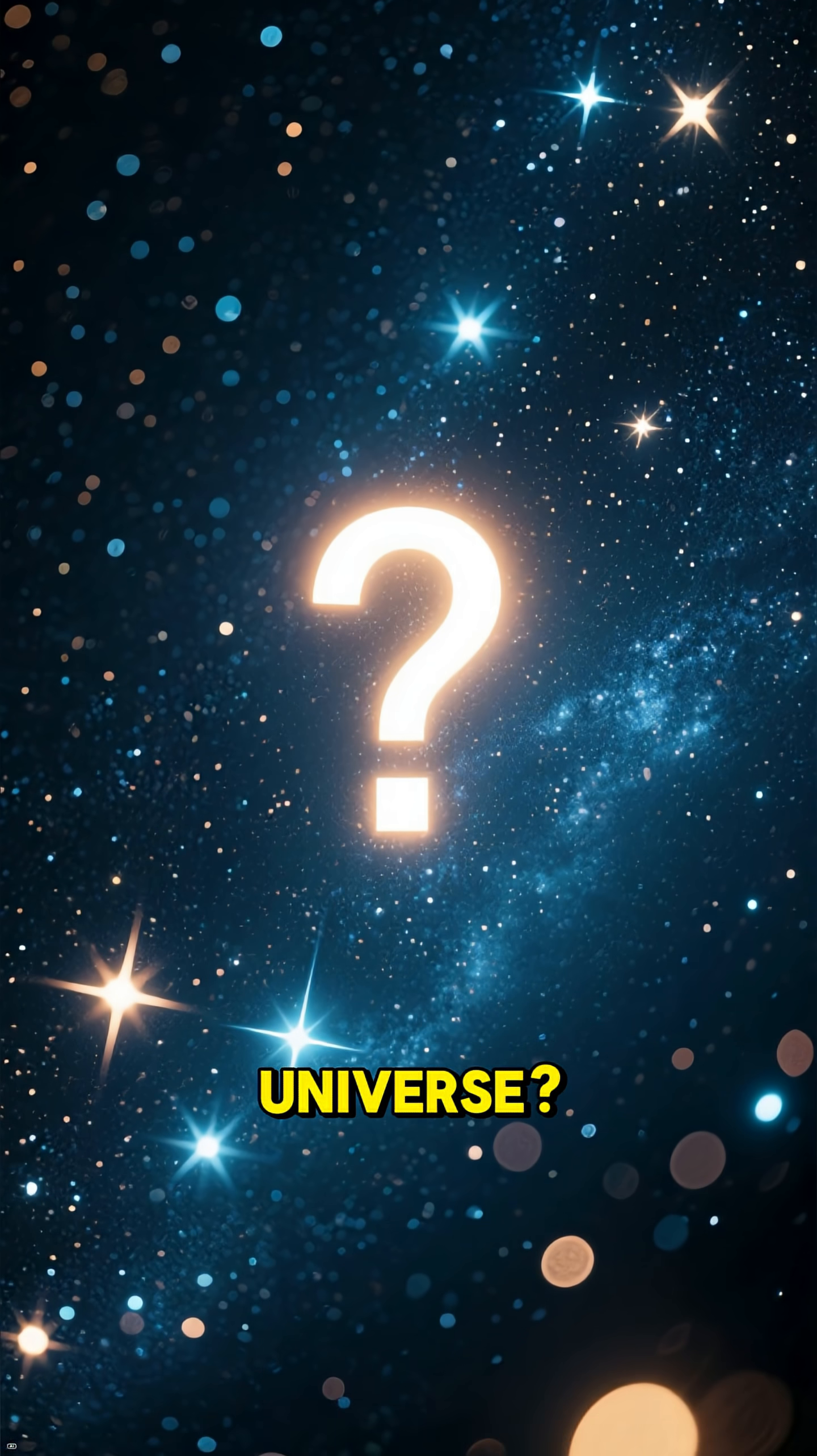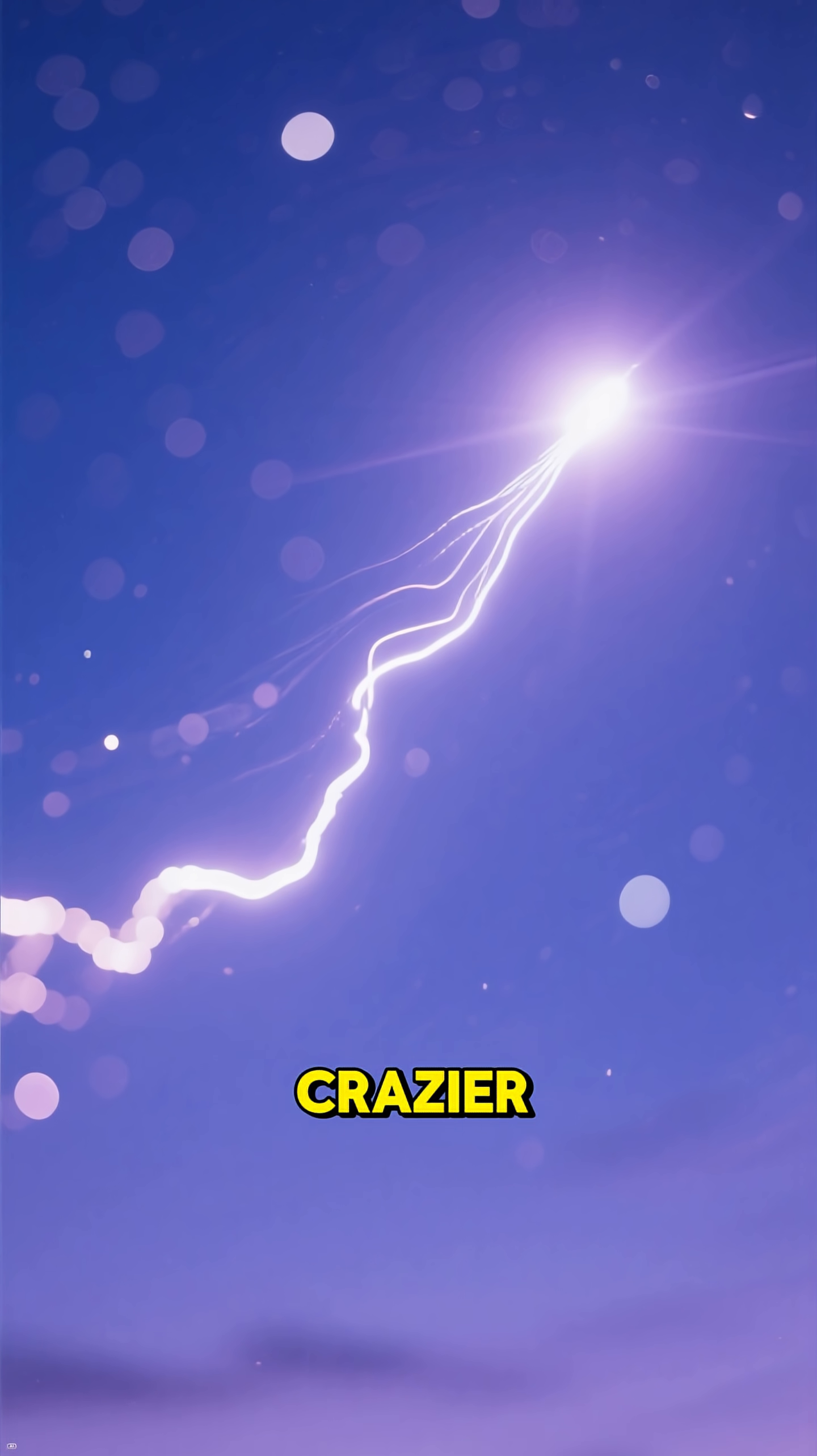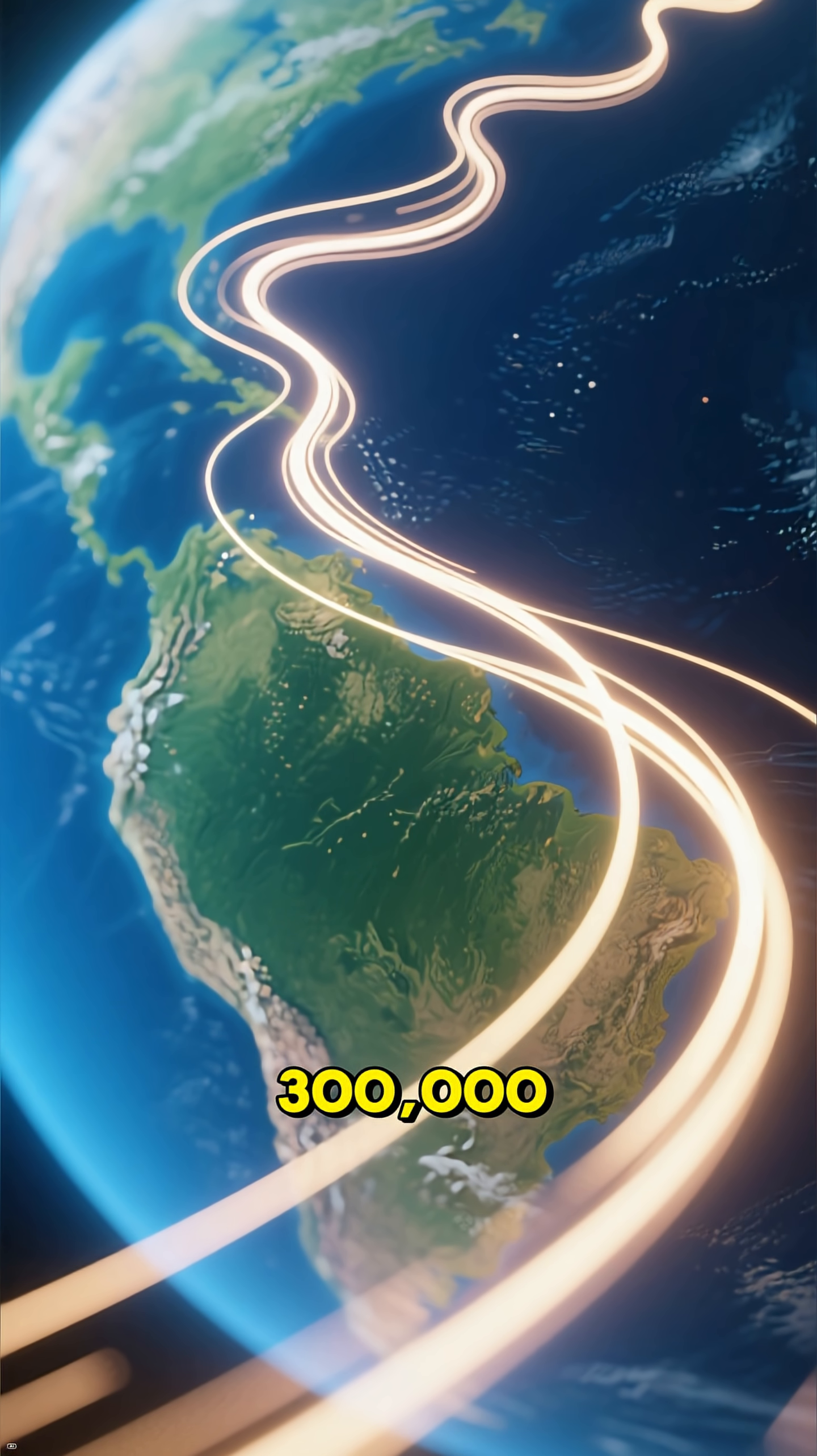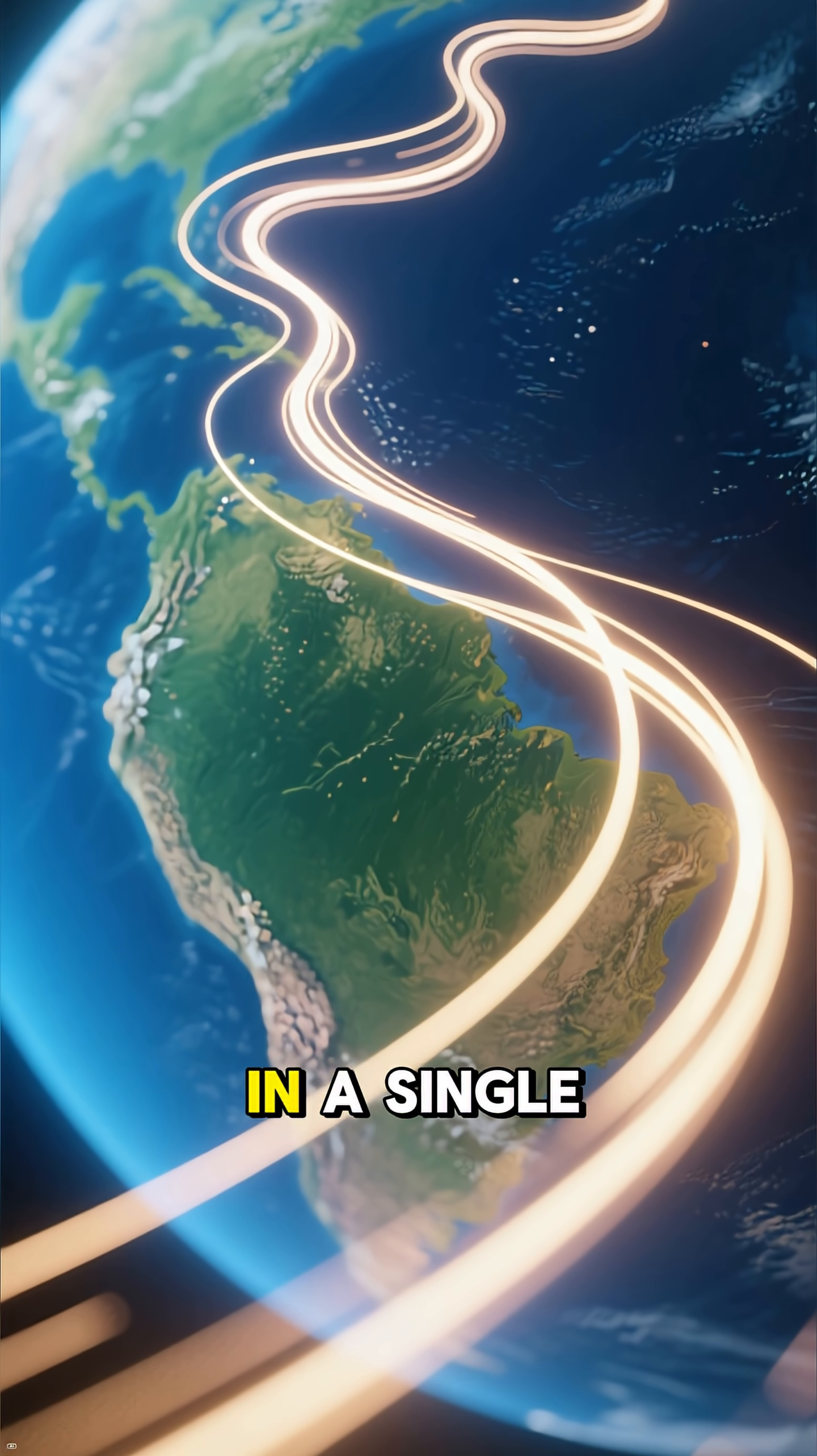What's the fastest thing in the universe? Most people say light and they're not wrong, but the full story is even crazier. Light blazes across space at about 300,000 kilometers per second. That's fast enough to circle Earth seven times in a single second.